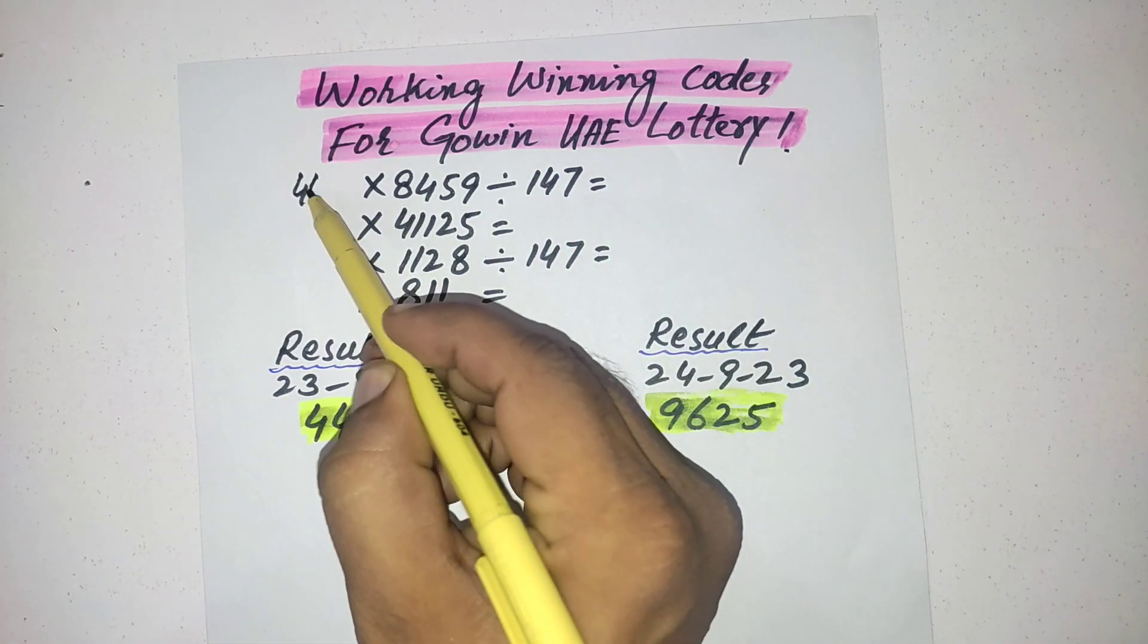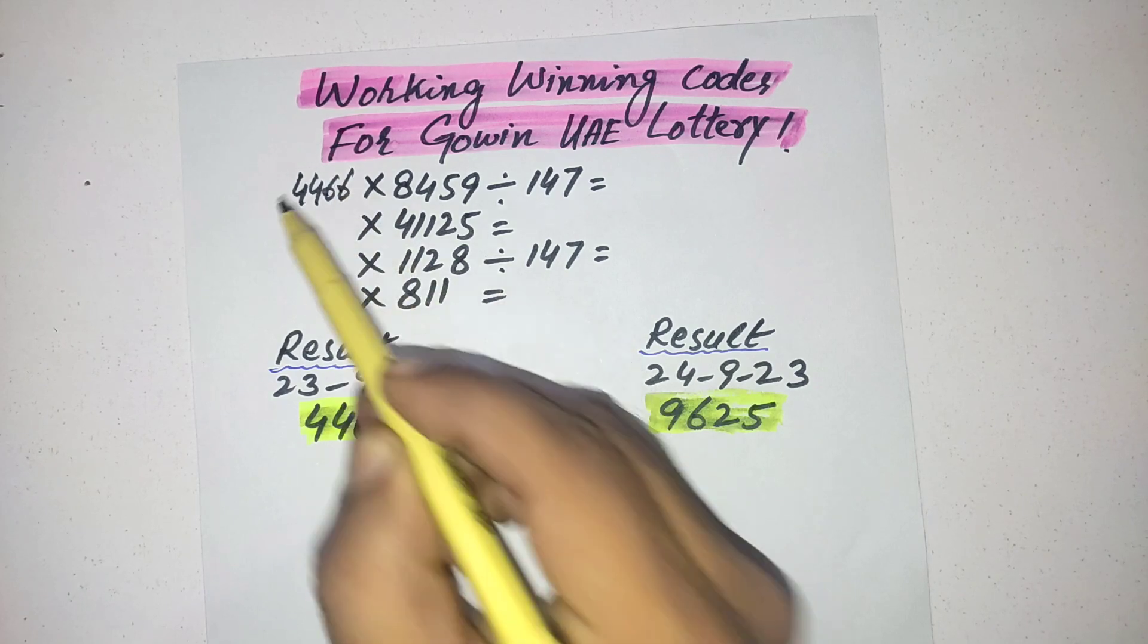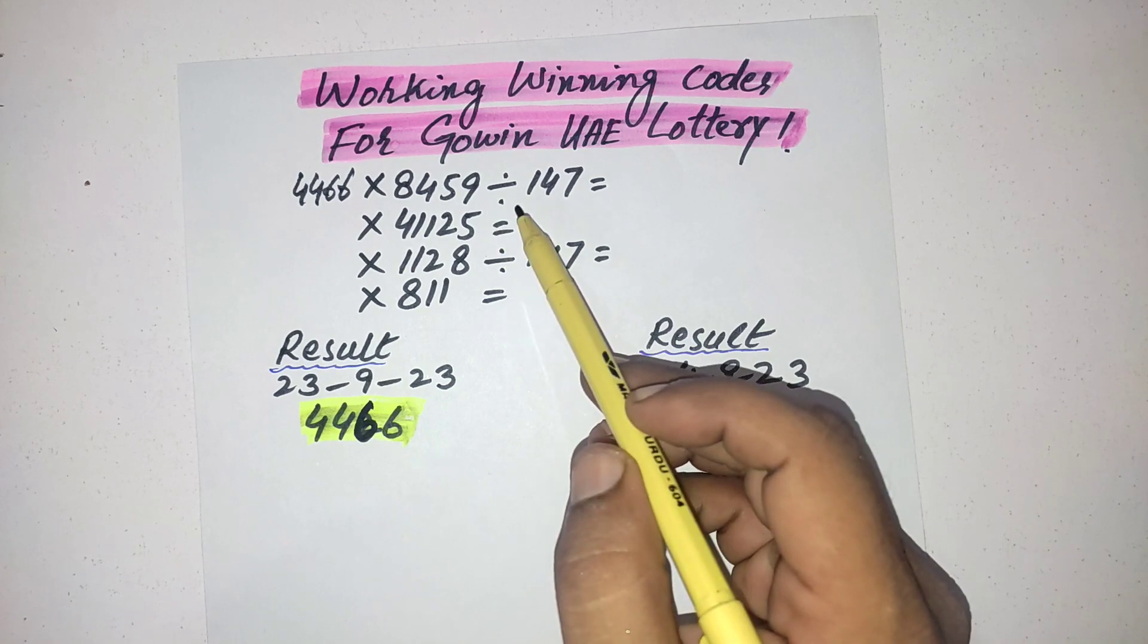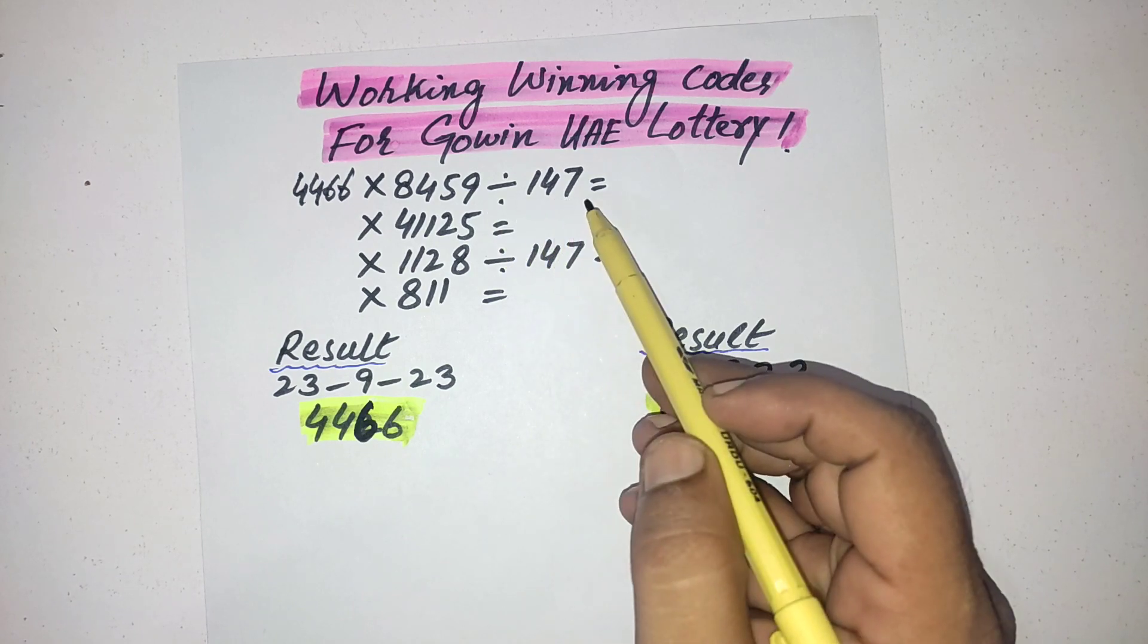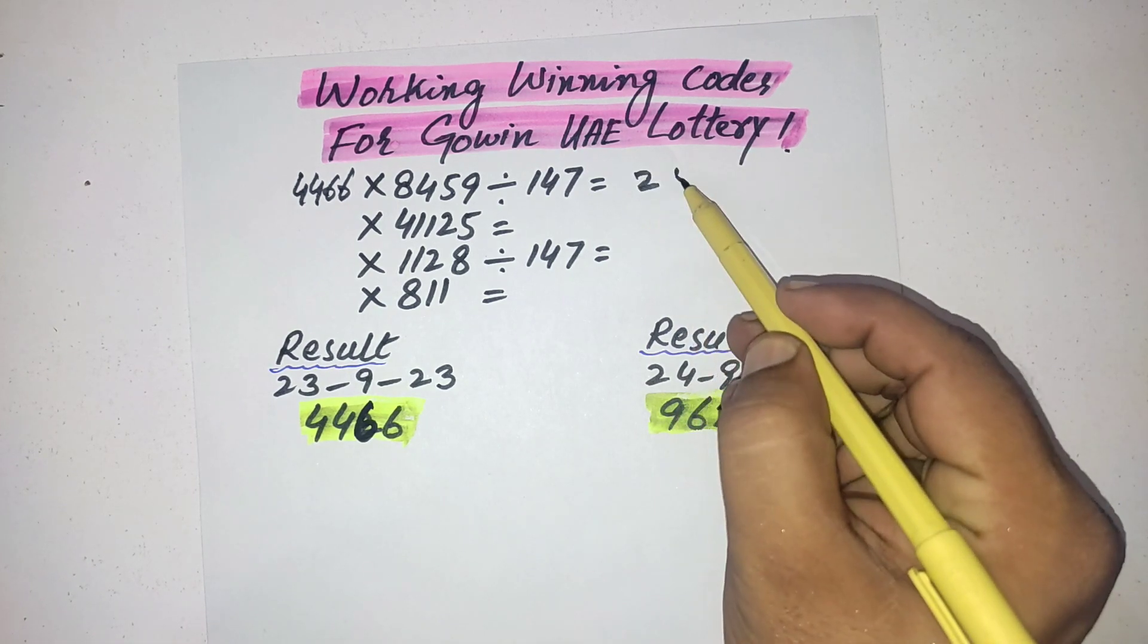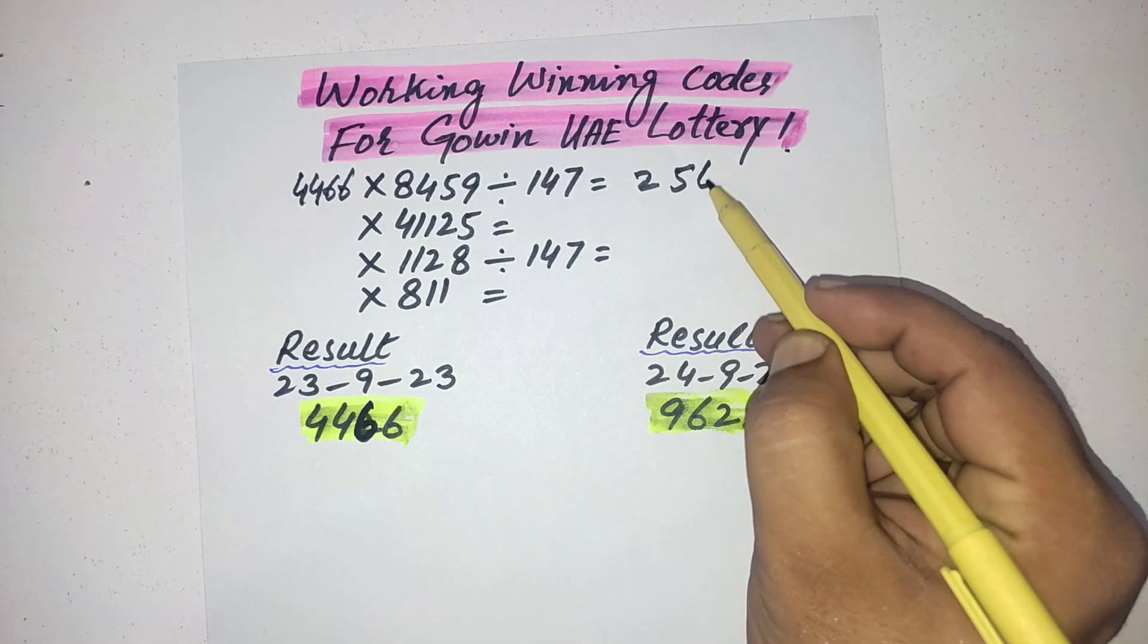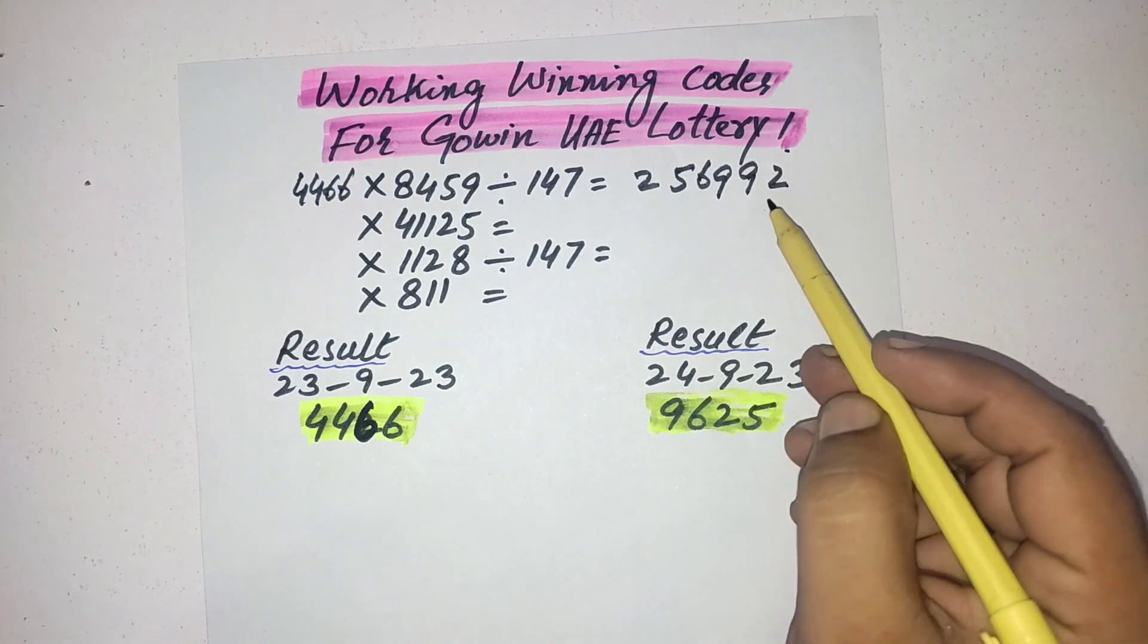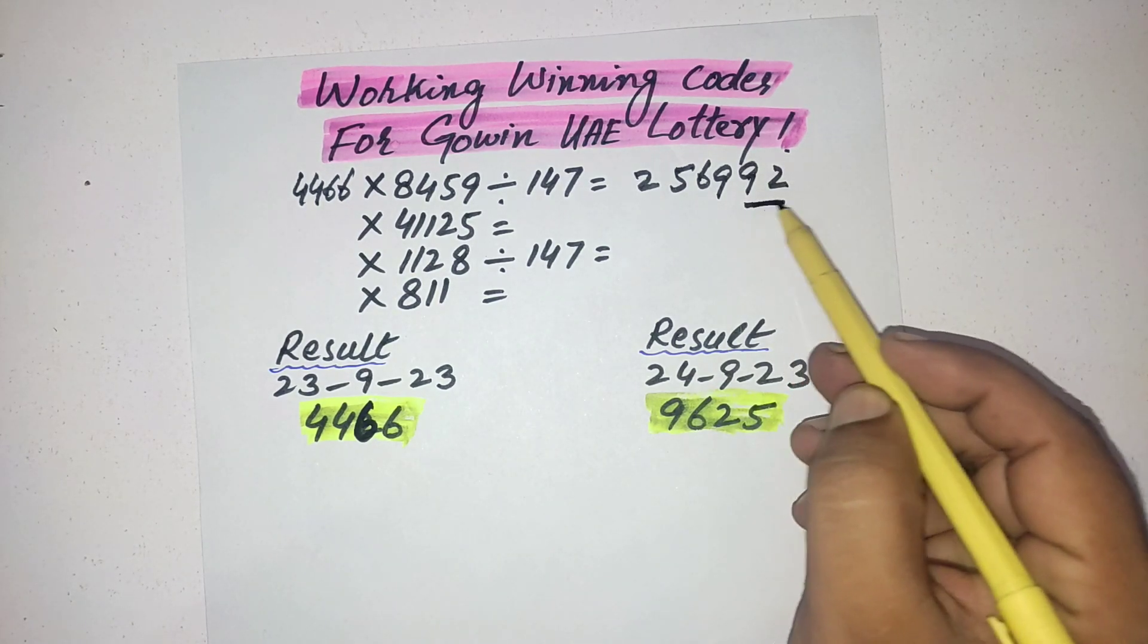First is 8459. Multiply the result with 8459 and divide with 147. The answer is 256992.